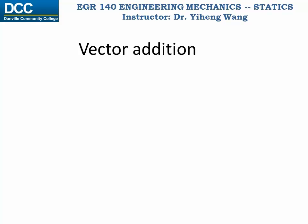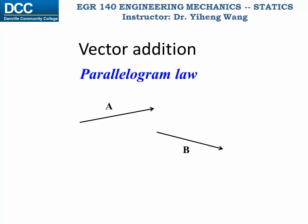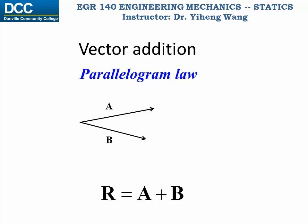To perform vector addition, we need to follow the parallelogram law. Let's say we have two arbitrary vectors a and b, and we want to find the sum, in other words, the resultant vector r, which equals a plus b. First, we need to join the tails of the two vectors together so that they are concurrent. Then we construct a parallelogram using a and b as the two sides, and draw an arrow that starts from the tails of a and b and points to the other end. This arrow is the resultant vector r, representing both the magnitude and direction of r.